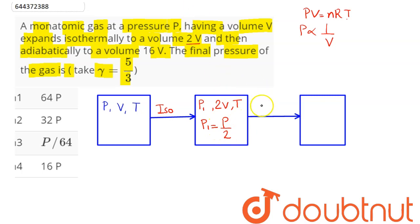Now in the second case, on adiabatic expansion to volume of 16V, volume becomes 16V. We need to find the final pressure, suppose PF. For adiabatic process, PV to the power gamma equals constant.